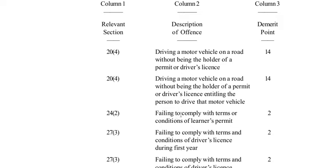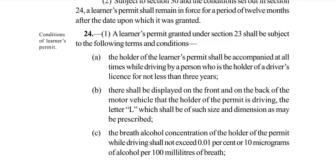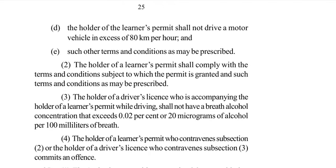Failure to comply with the terms or conditions of a learner's permit will cost you 2 demerit points. The relevant section is Section 24 subsection 2. Section 24 deals with conditions of a learner's permit. Subsection 2 states: the holder of a learner's permit shall comply with the terms and conditions subject to which the permit is granted and such terms and conditions as may be prescribed.